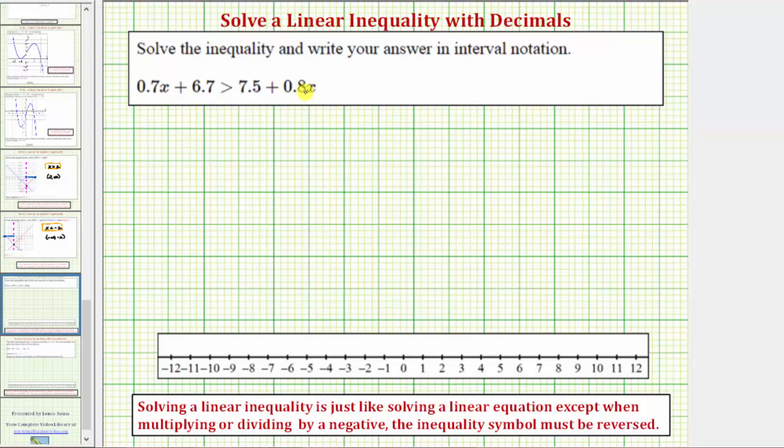Let's begin by clearing the decimals from the inequality. So multiply both sides by ten. So we'd have ten times the quantity 0.7x plus 6.7 greater than ten times the quantity 7.5 plus 0.8x.